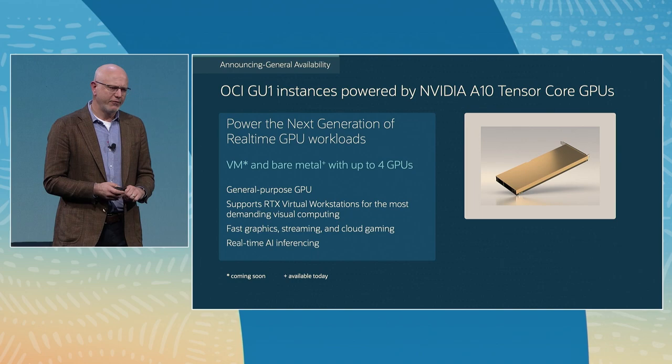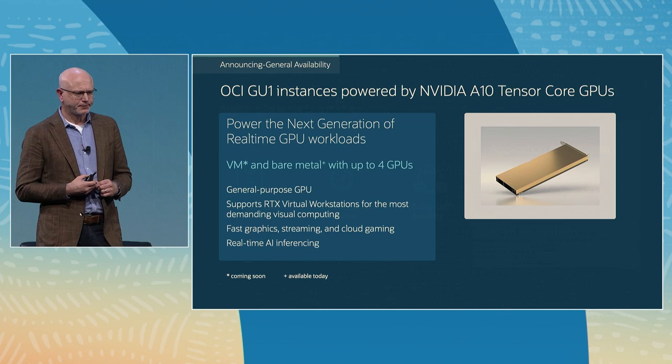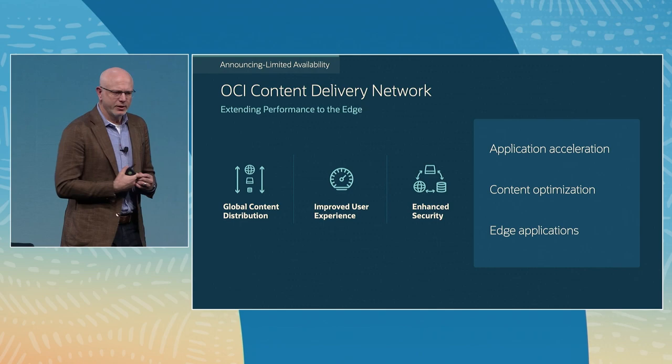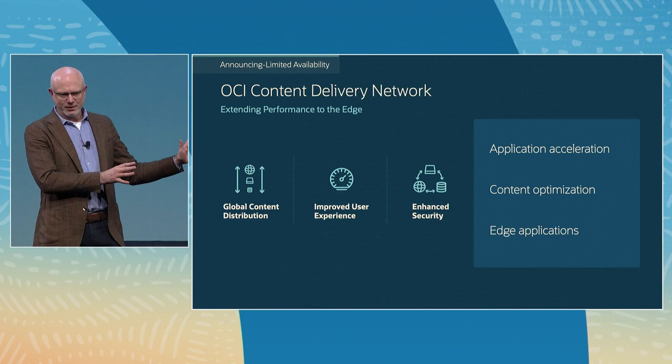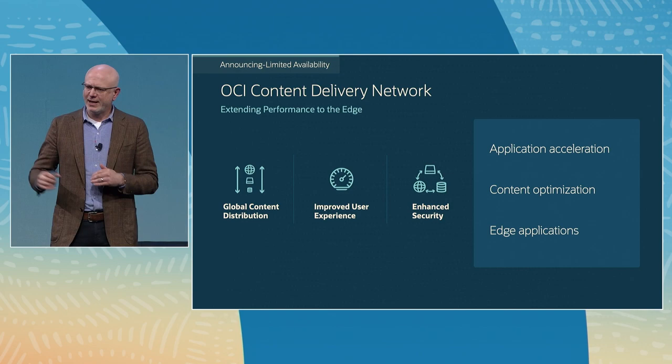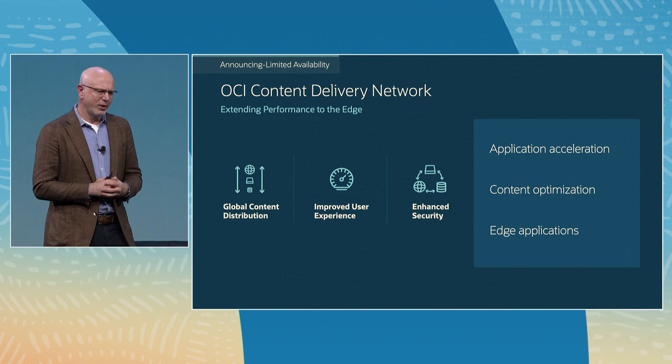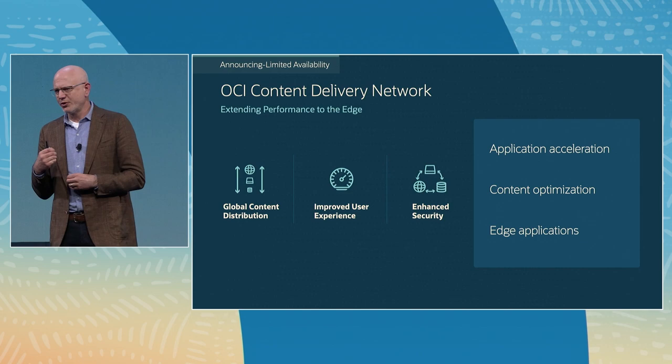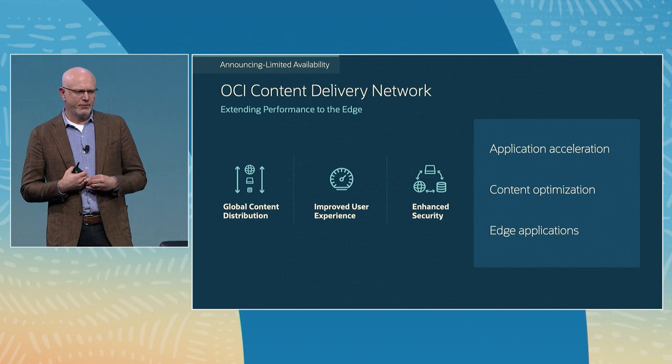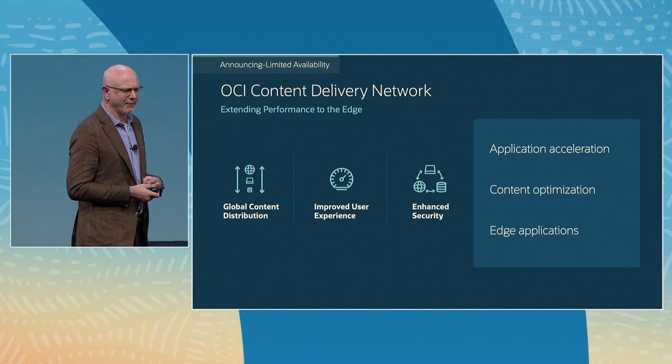Sticking with the performance theme, I also wanted to announce the availability of the OCI Content Delivery Network. This is a different set of problems than AI and machine learning training — it's about internet-facing applications and how to efficiently get content to users at scale. We now have a global content delivery network as part of OCI, and for customers doing internet-facing application deployments, this is a way to accelerate the delivery and performance of applications, looking at a whole new generation of capabilities for edge applications and edge application architectures.